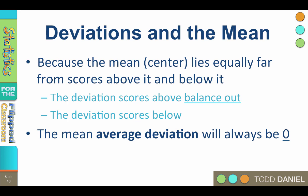Therefore the sum of the deviation scores, and by extension the mean average deviation, will always be 0. And that is going to make it really hard to measure variability.